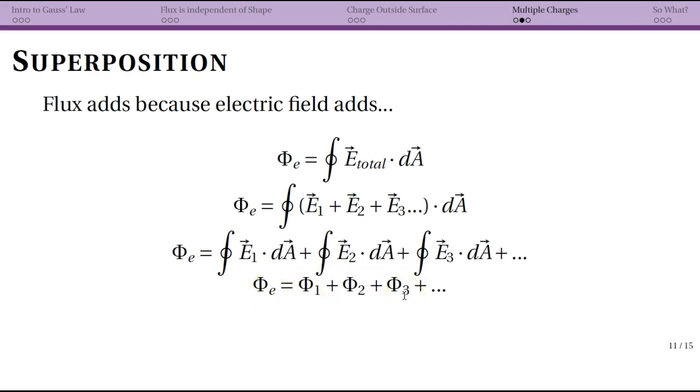If we had our surface here and, for instance, we had q1 on the inside, another charge on the inside which is q2, and then maybe q3 was on the outside, we would then look at each of these fluxes. Flux one is just going to be q1 over epsilon naught, flux two is just going to be q2 over epsilon naught.